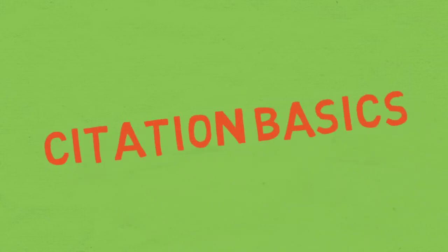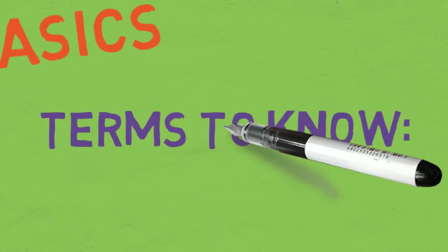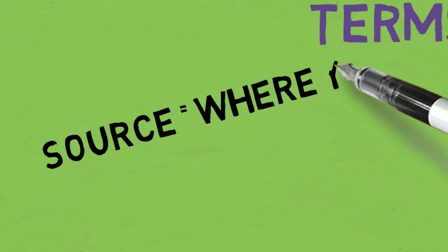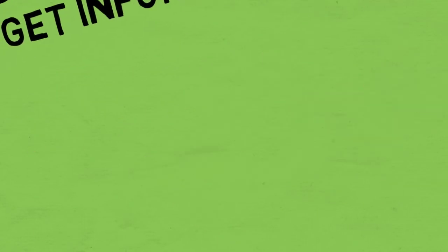To learn how to cite information, you must first know a few key terms. A source is a place where your information comes from. It might be a print source, or a digital source such as the internet, or even a person such as in an interview.